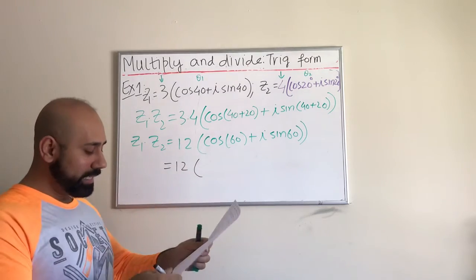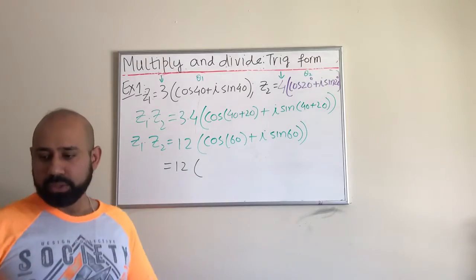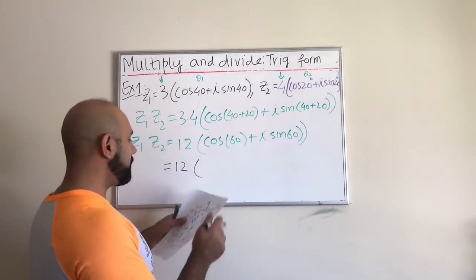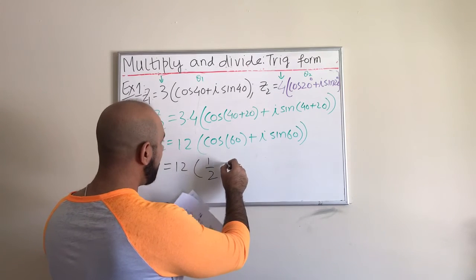From the unit circle we substitute the values for the cosine and the sine. I have cosine of 60 and from my unit circle I can see that the cosine of 60 is 1 half and the sine of 60 is radical 3 over 2.